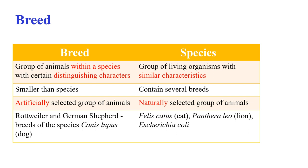Groups of animals are selected artificially in a breed, whereas naturally selected groups of animals are present in species. Rottweiler and German Shepherd are examples of dog breeds. Felis catus, Panthera leo, and Escherichia coli are some of the examples of species.